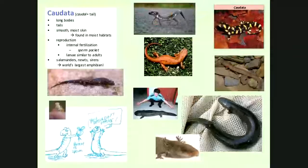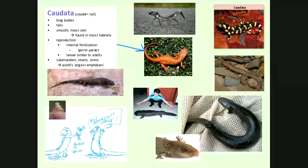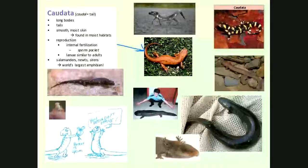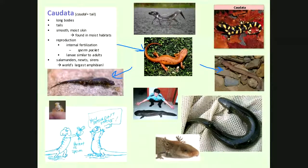Salamanders — in the group Caudata — are a group we don't see a lot of, which is too bad. One of my favorites is the red-spotted newt. There's no technical difference between a newt and a salamander. We do have red-spotted newts in Florida, and also the dusky salamander. Salamanders have tails, a long body, and smooth moist skin. The slimy salamander, found here in Florida at places like Wekiva State Park, is a lungless salamander that relies completely on cutaneous respiration.